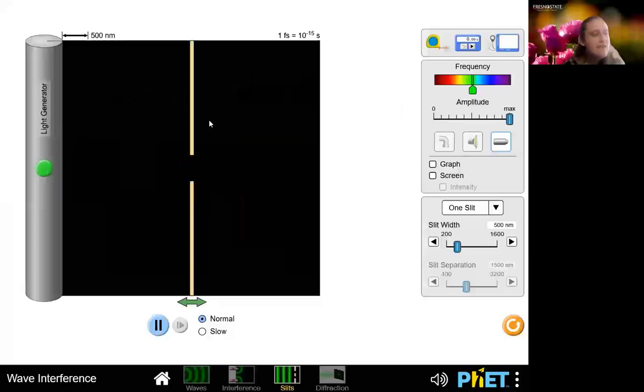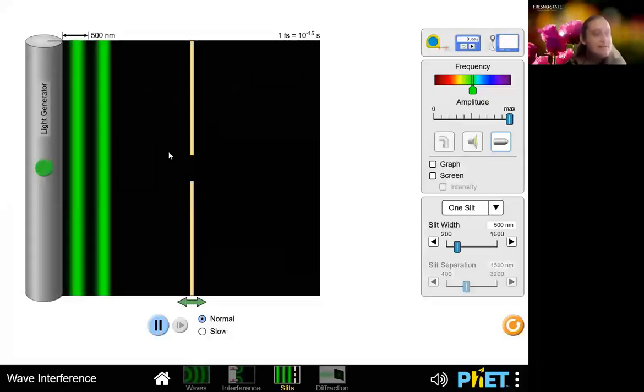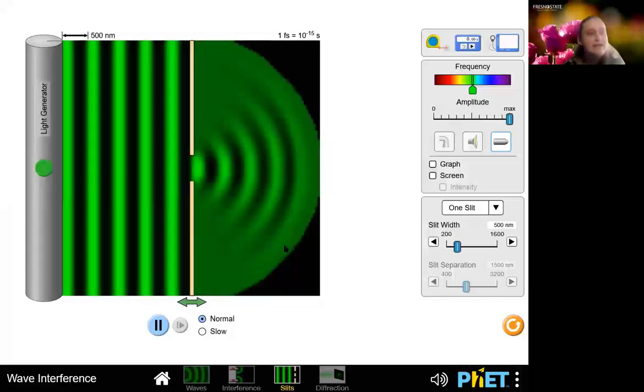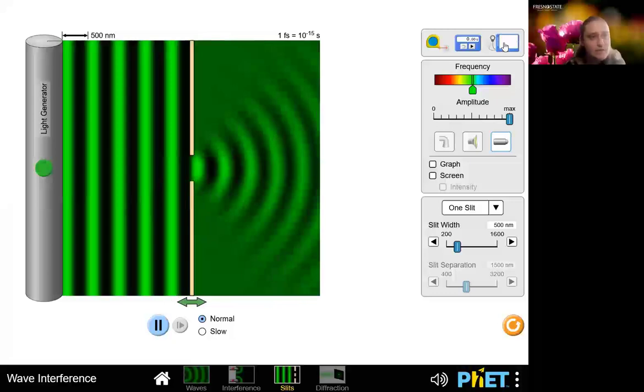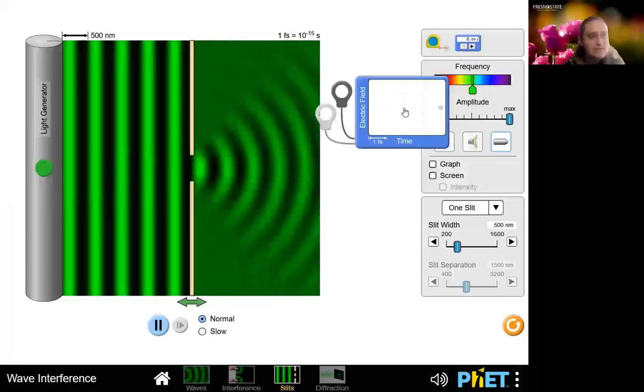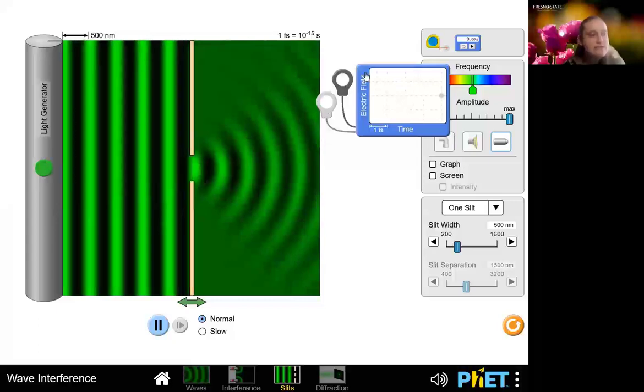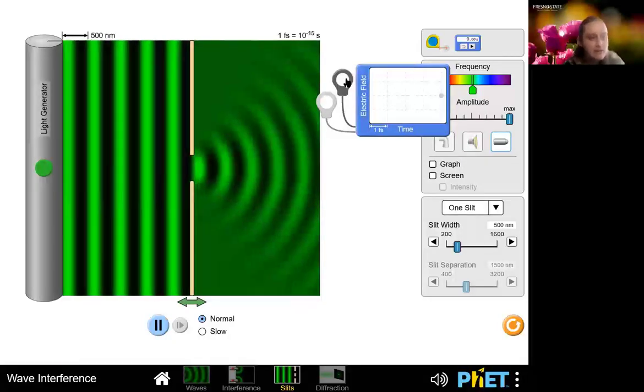And so here I have a light which I can turn on by pushing the button and it's passing through a slit. And we can see as it passes through that slit, it's going to bend and it diffracts. I can go ahead and take this monitoring tool, which will show me the frequency, the plot of the wave.